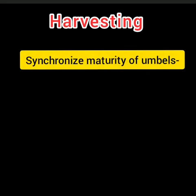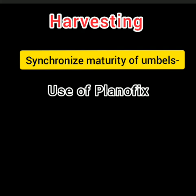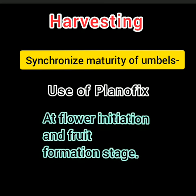To synchronize umbel maturity, a growth regulator called Planofix, which contains naphthaleneacetic acid — an auxin — can be used at a very low concentration of 5 ppm at flower initiation and fruit formation stage. This is a critical intervention to reduce shattering losses and synchronize the maturity of primary and secondary umbels. While 100% uniform maturity cannot be ensured, around 70 to 80% of umbels and fruits will mature simultaneously, reducing shattering losses and increasing yield by around 40 to 50%.